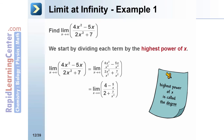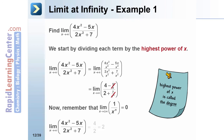If we simplify, we get the limit as x approaches infinity of (4 − 5/x) divided by (2 + 7/x²). The rule we just established says the limit as x approaches plus or minus infinity of 1/xⁿ is 0, so the terms 5/x and 7/x² both approach 0. That leaves us with 4 divided by 2, so the limit equals 2.